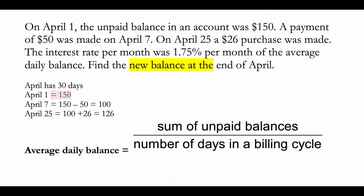On April 1st, there was a balance of $150. This amount was reflected at the end of April 1st through April 6th — that's six days. So we multiply 150 by 6, which gives us 900.